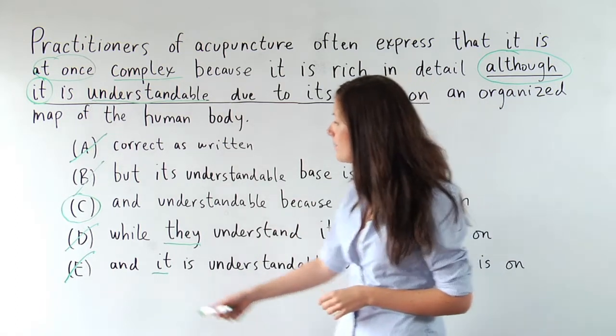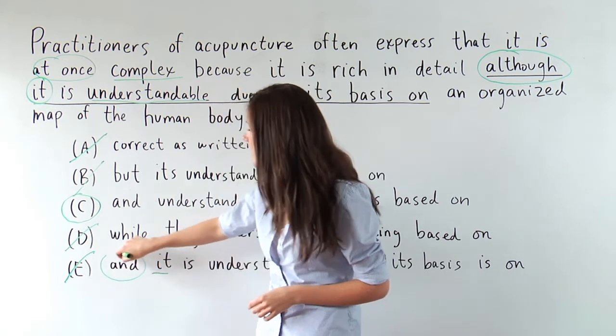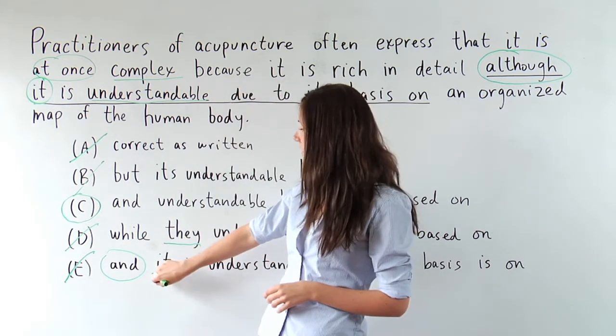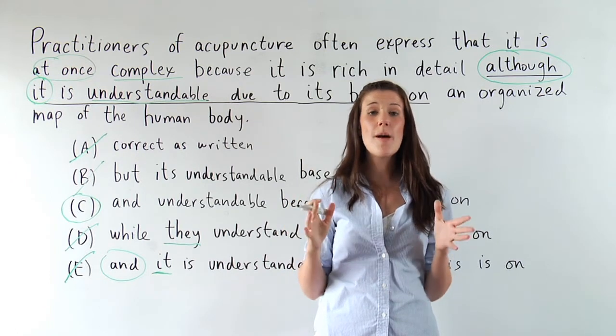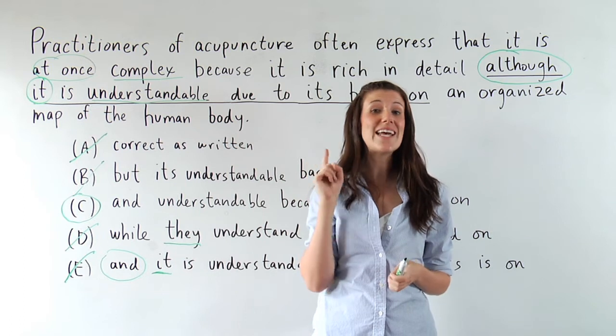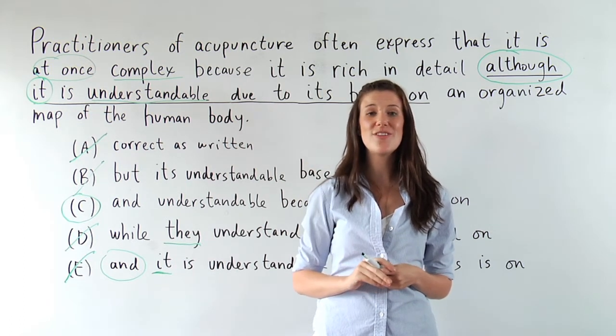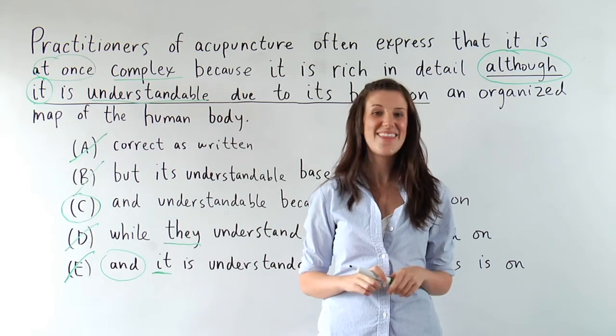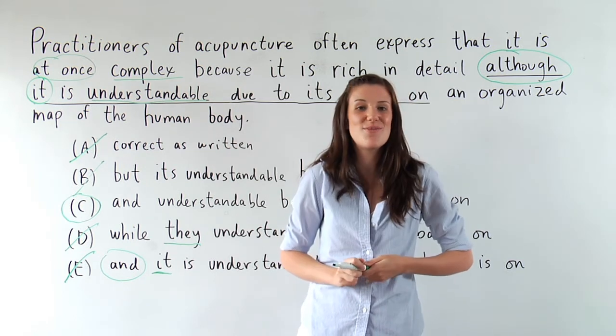If you take a look, the only other answer choice that has and as an option is E, but we already saw that that's not grammatically parallel, so it's out of there. So remember, when you see those connector buddies in an SAT sentence, remember, they like to connect the same parts of speech. So you have to check and make sure that they are parallel. Thanks so much, guys. Hope you enjoyed this challenge question and hope to see you in class soon.